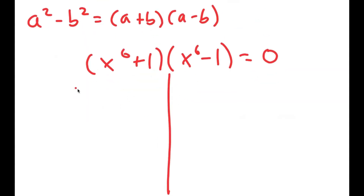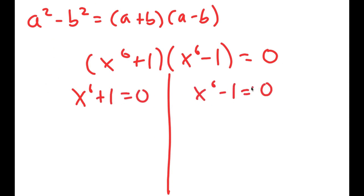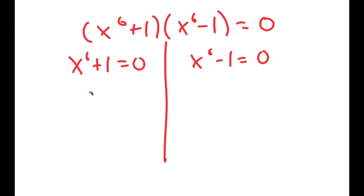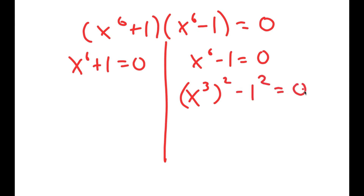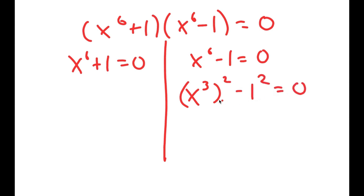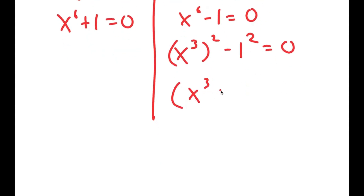This gives me two equations: x to the power of 6 plus 1 equals 0, and x to the power of 6 minus 1 equals 0. Now I'm going to do the same thing again. I'm going to rewrite x to the power of 6 minus 1 equals 0 as x cubed, squared, minus 1 squared equals 0, and use this property again to get x cubed plus 1 times x cubed minus 1 is equal to 0.